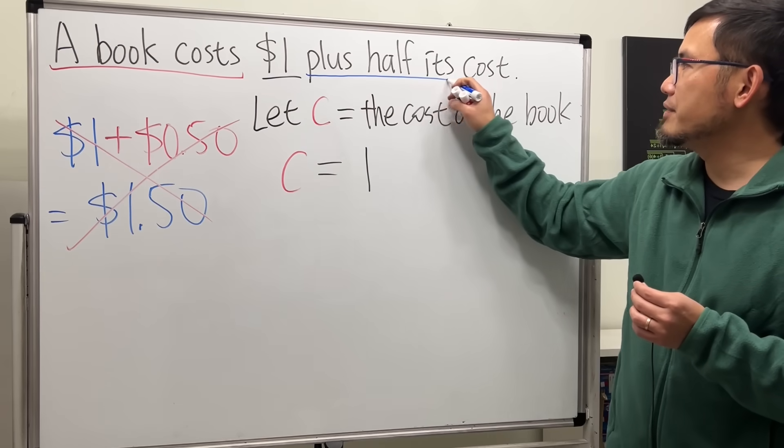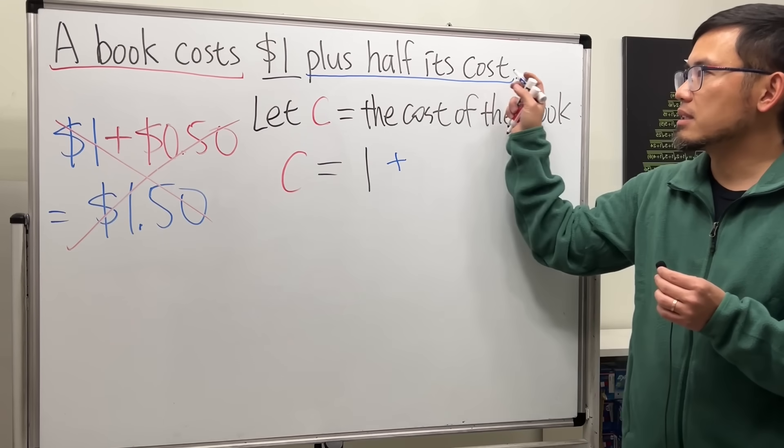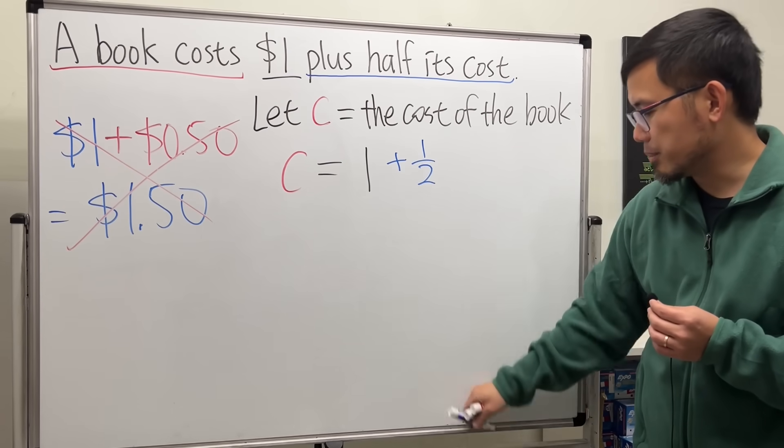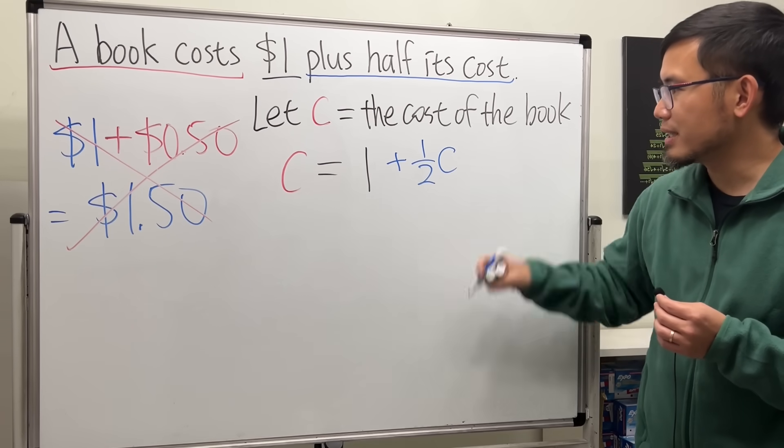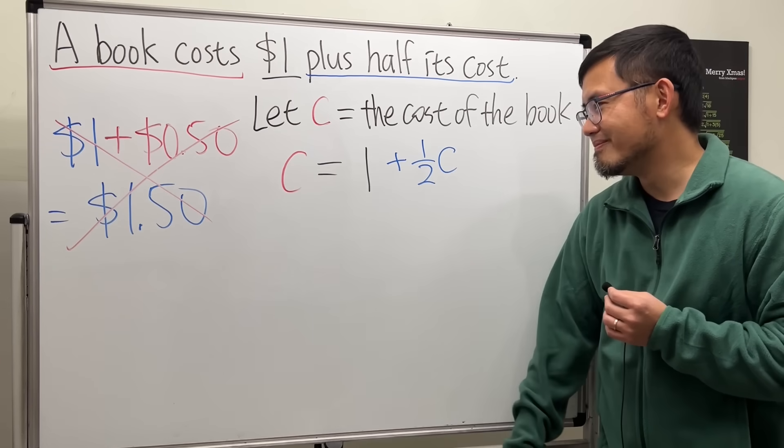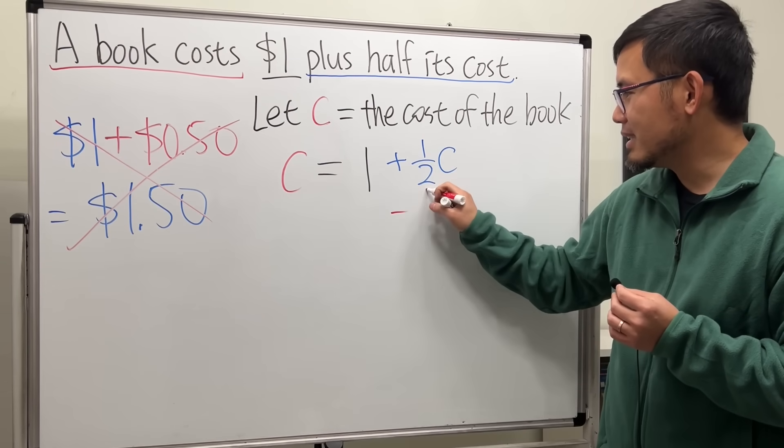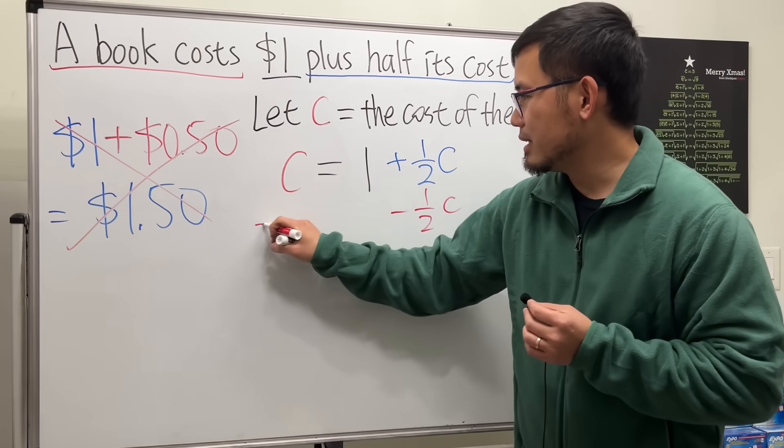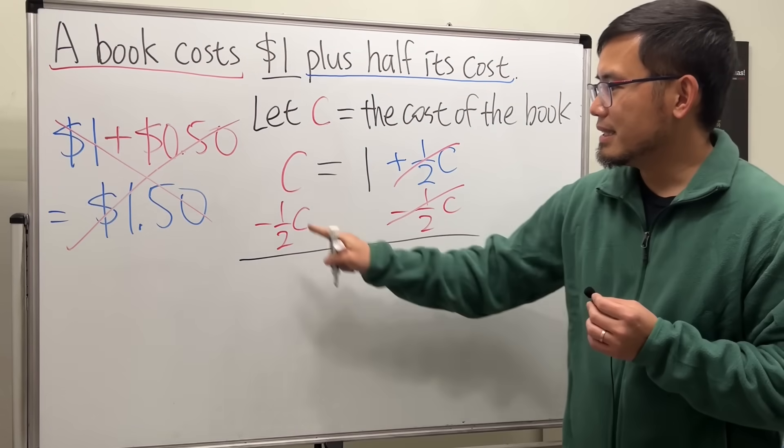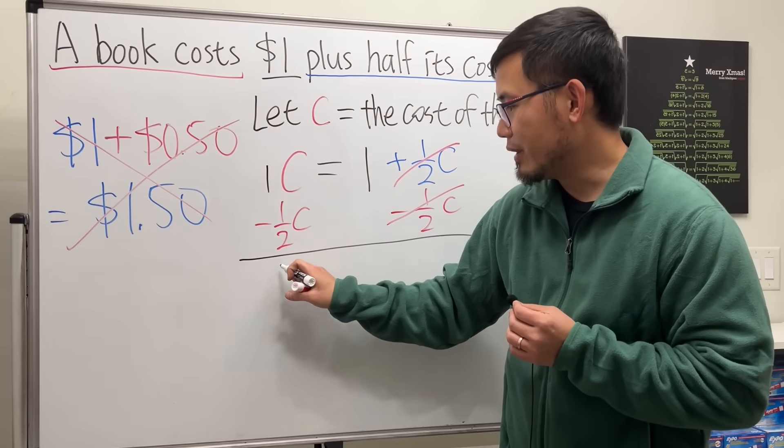And then the third part is saying that plus half its cost. Plus, that means we are going to add half its cost, so one-half times the C, which is the cost of the book. Let me put this in blue like that. So here we have an equation that we have to solve. To solve this, put the C to the other side, so that's minus one-half C, minus one-half C. So this and that cancel. This is like 1C minus one-half—we get one-half C.